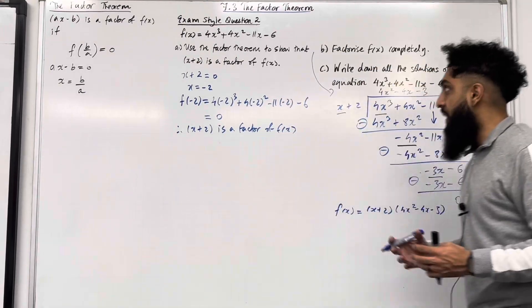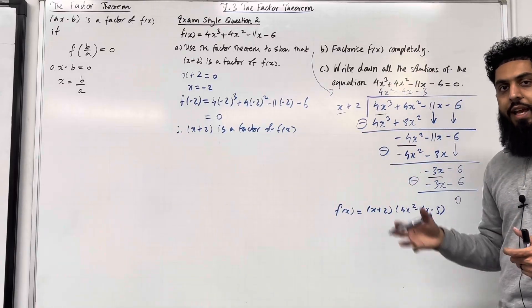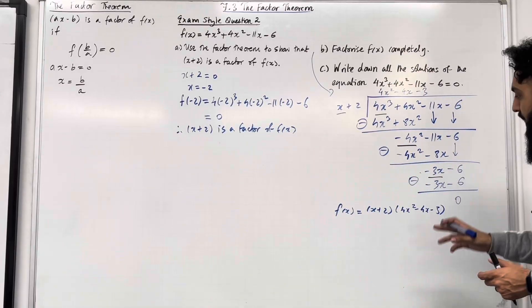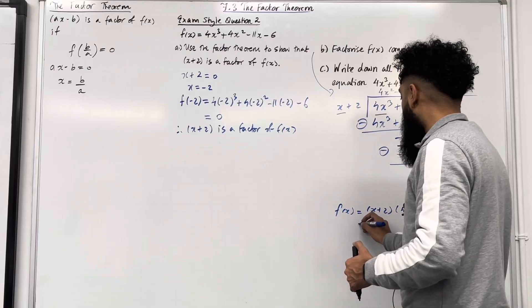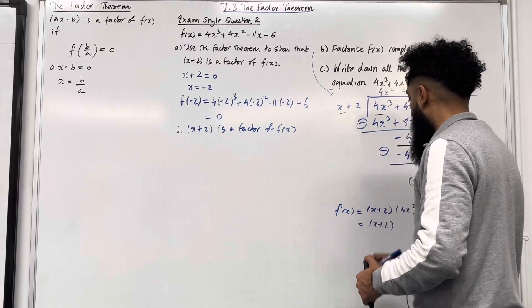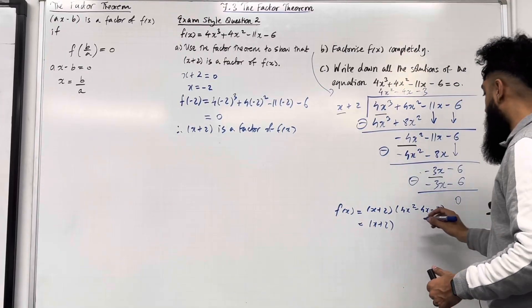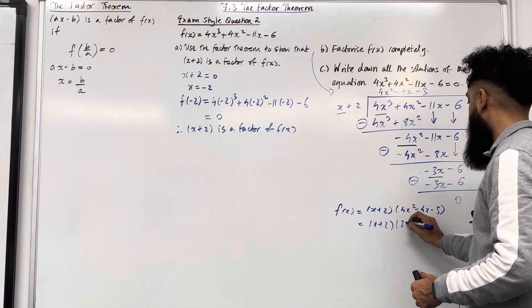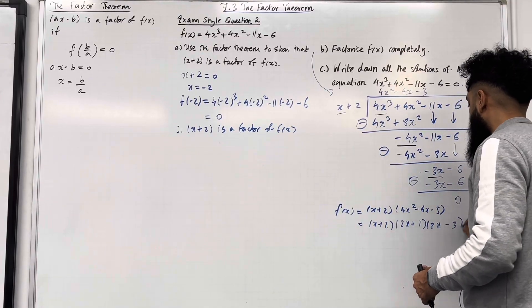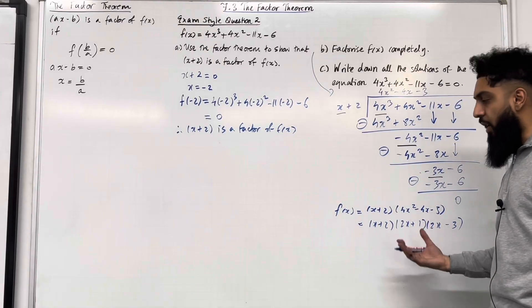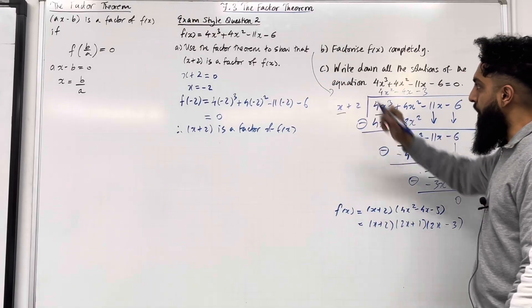The question says factorise f(x) completely. To get the next mark we need to factorise the quadratic. So we have (x + 2), and the factorization of the quadratic is (2x + 1)(2x − 3). That is the complete factorization, and this completes Part B.